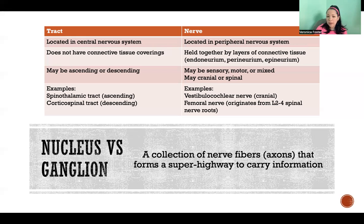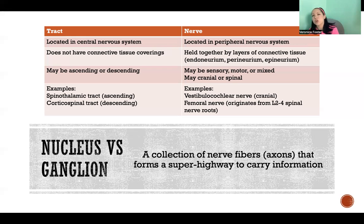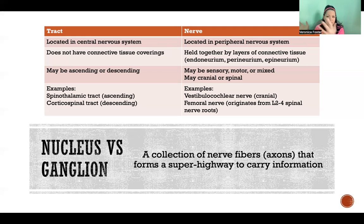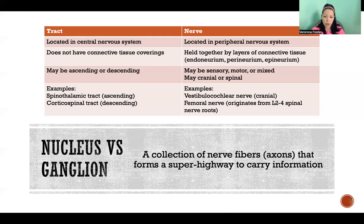Some examples of nerves would be the vestibulocochlear nerve, which is a cranial nerve, or the femoral nerve, which is a branch off of spinal nerves. It originates from the L2, L3, L4 spinal nerve roots, with a few different branches merging together to form the femoral nerve. Really, all collections of nerve fibers or axons that are outside of the brain and spinal cord are nerves.